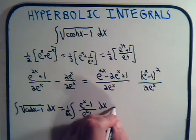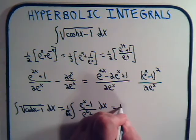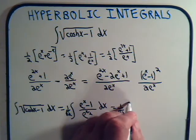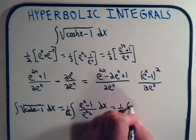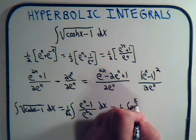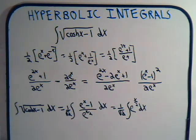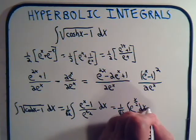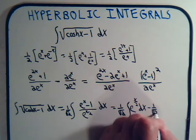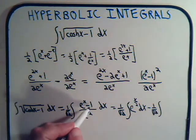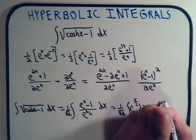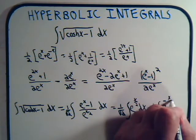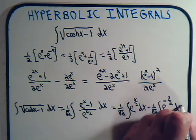So this equals 1 over the square root of 2 times the integral of e to the x over 2 dx, and then minus 1 over the square root of 2 times the integral of 1 divided by e to the x over 2. That is e to 0 divided by that, so this becomes e to the minus x over 2 dx.